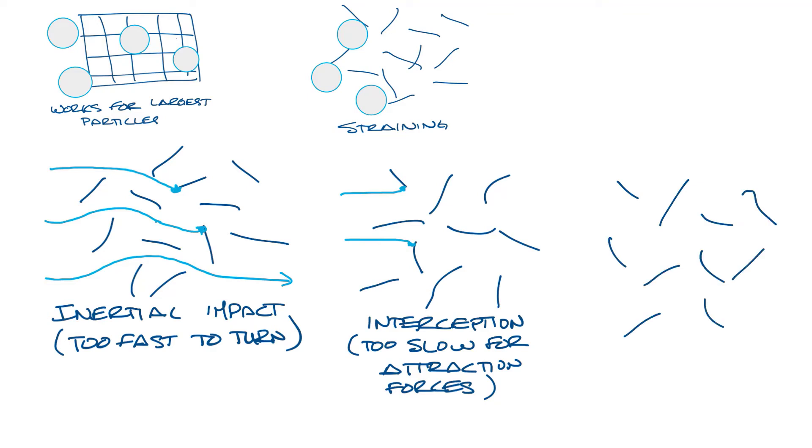Now for the smallest particles, these particles that are so small that the motion of the air molecules around them can make them bounce around as they travel. So they move in a motion kind of like this as the air knocks them around. This is called Brownian motion. And since they're moving all around, they also get caught in the fibers. This is called diffusion.